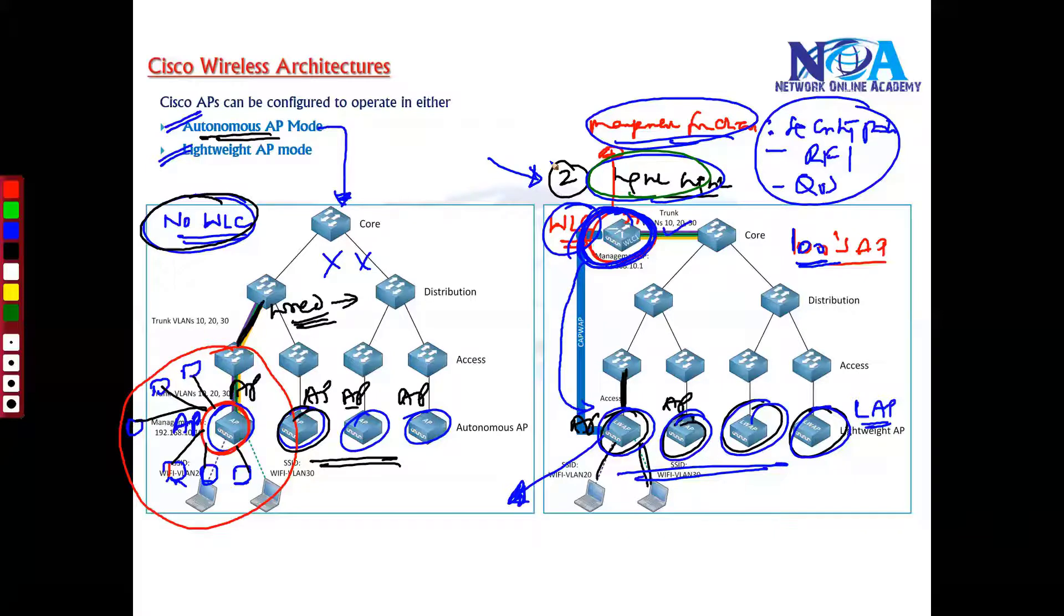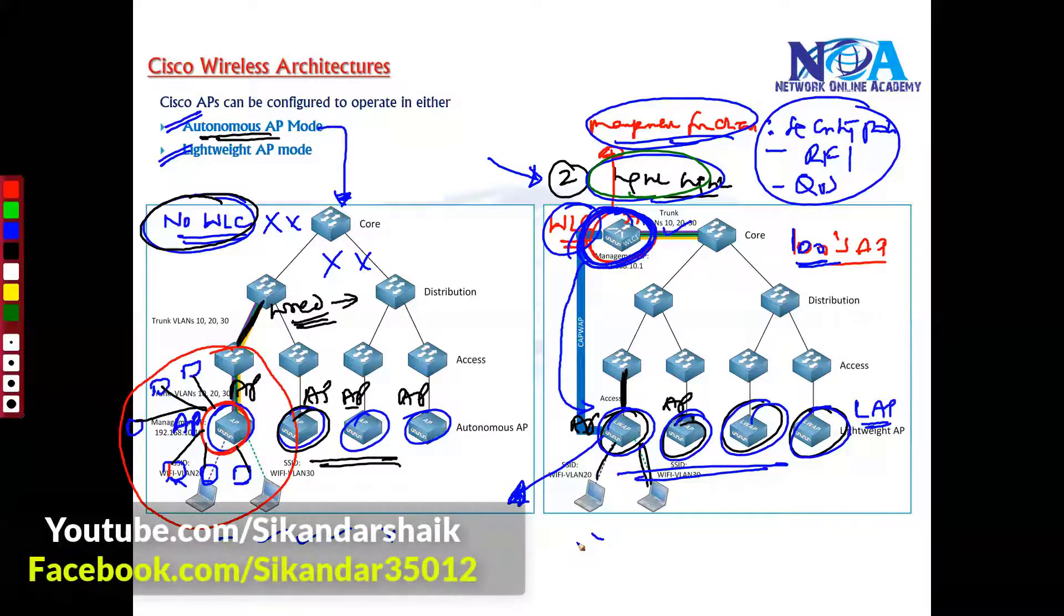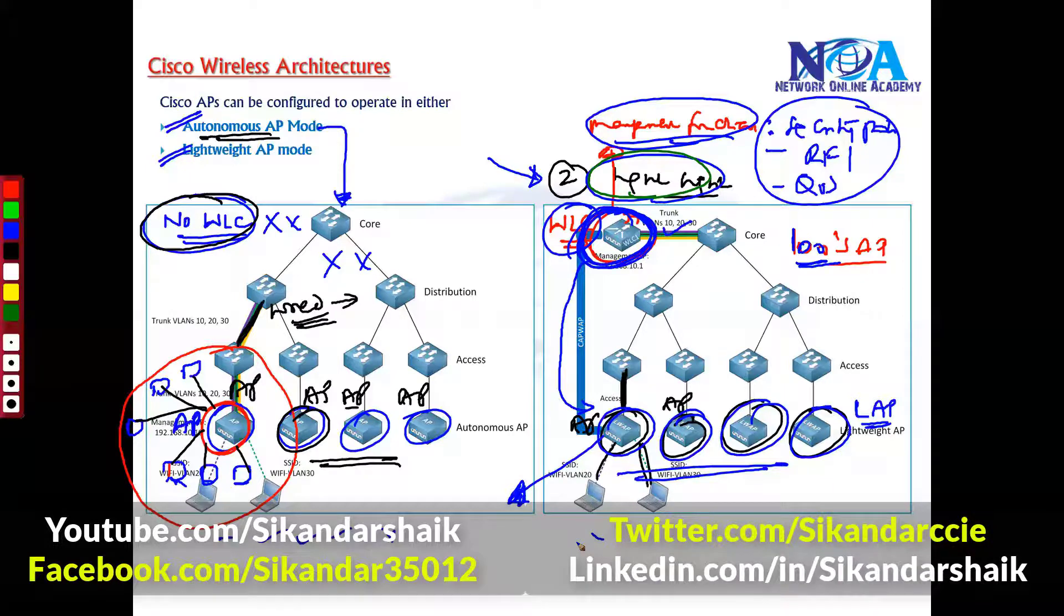When you're going with shopping malls or airports, it's not possible to manage without controllers. This autonomous mode is not really scalable - it's applicable when you have one or two access points or few access points. But when you need to maintain hundreds or thousands of access points, you always prefer to go with lightweight access point mode, which is more common in production environments.